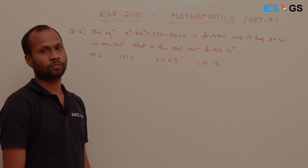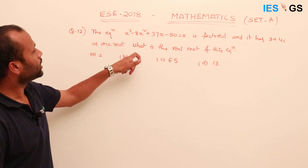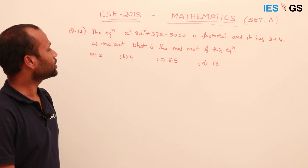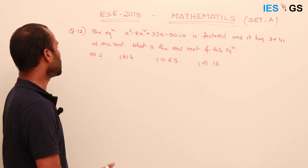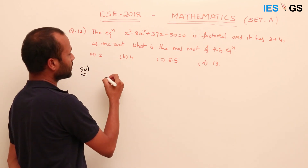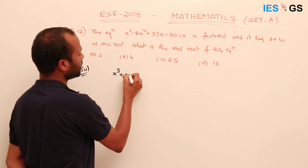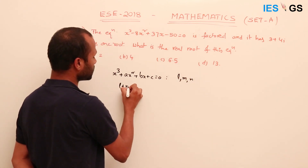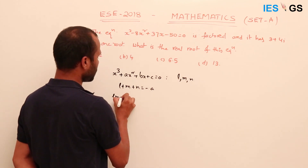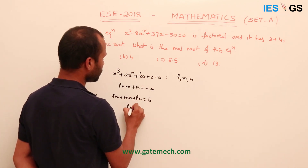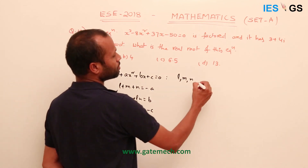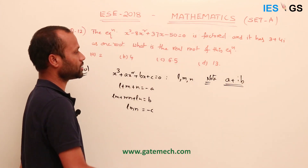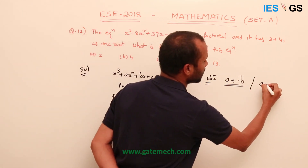Question 12: the equation x³ minus 8x² plus 37x minus 50 equals 0 has 3 plus 4i as one of its roots. Find the real root. Using the same rules from Question 11 — and importantly, whenever a complex number a plus ib is a root of an equation, its conjugate a minus ib is also a root. Complex roots always appear in conjugate pairs.